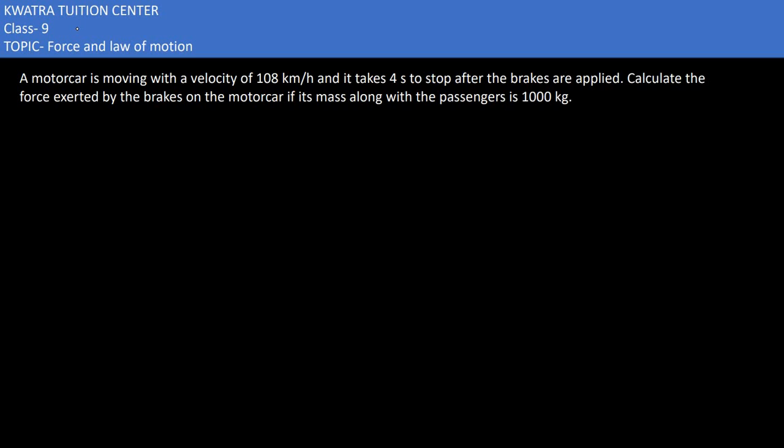Now, the third part says we have a motor car moving with a velocity of 108 kilometer per hour. In this case, we can understand that the initial velocity would be 108 kilometer per hour. We need to convert it into meter per second first of all.